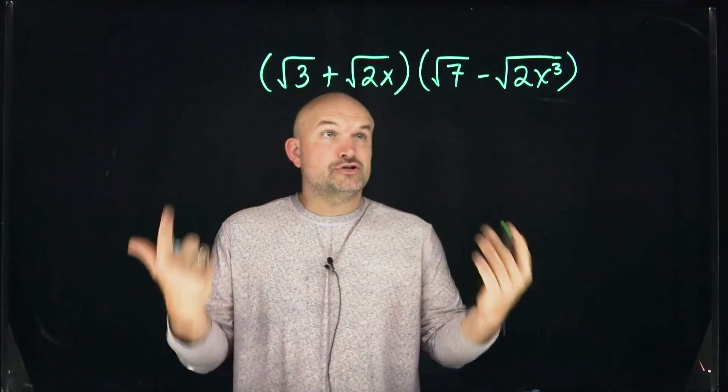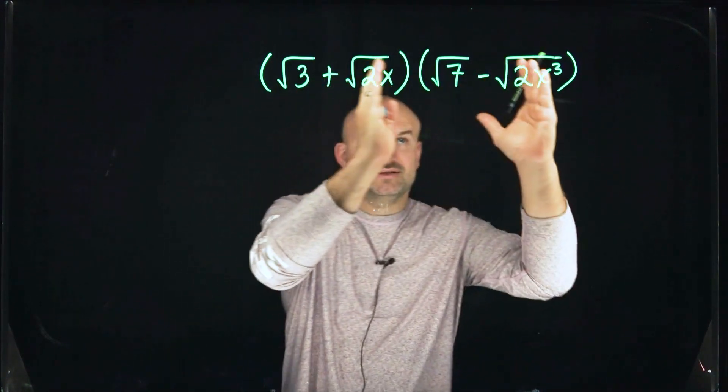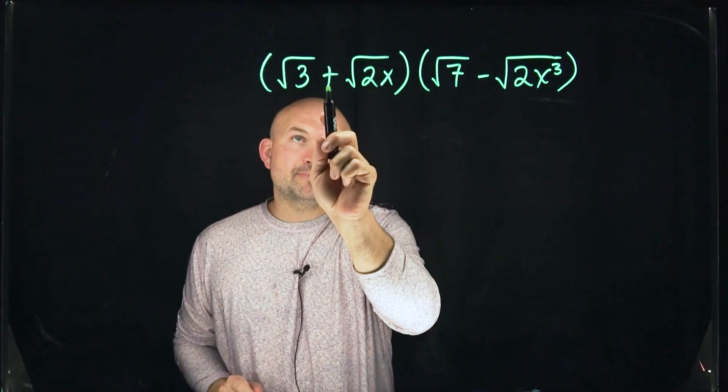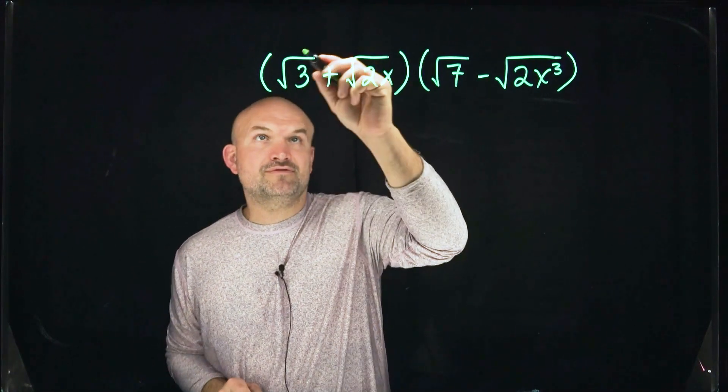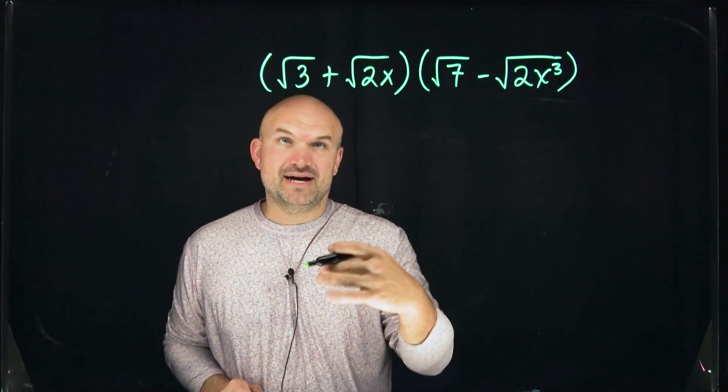First of all, we need to apply the distributive property. We have a binomial times a binomial. You can see they're separated by addition and subtraction. So therefore, we're just going to multiply everything by everything.